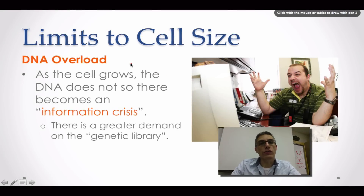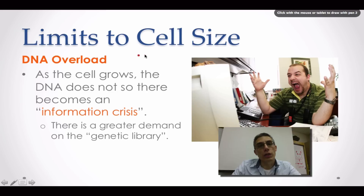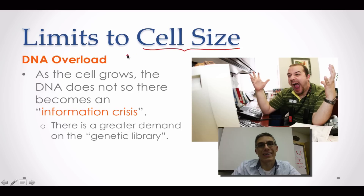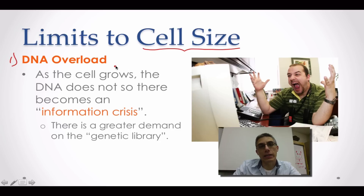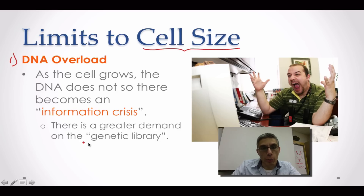There is a reason why cells are so, so small, and we're going to look at two limits to cell size — two reasons why cells have to stay really small. One of the first reasons is something called DNA overload. The DNA found inside the nucleus is going to serve as the information center, or what we call the genetic library for the cell.